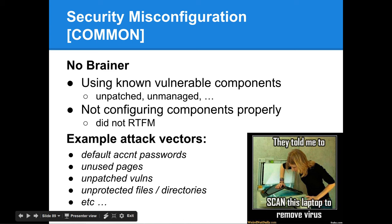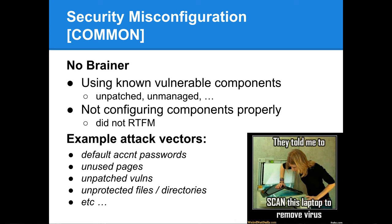Security misconfiguration is very common and straightforward. It simply involves using known vulnerable components, not patching components you utilize, using them in default insecure configurations, or not configuring plugins properly — which all boils down to admins not reading the manual. Attack vectors include attackers getting in through default account usernames and passwords, accessing unused pages, attacking unpatched vulnerabilities, and accessing unprotected files and directories.